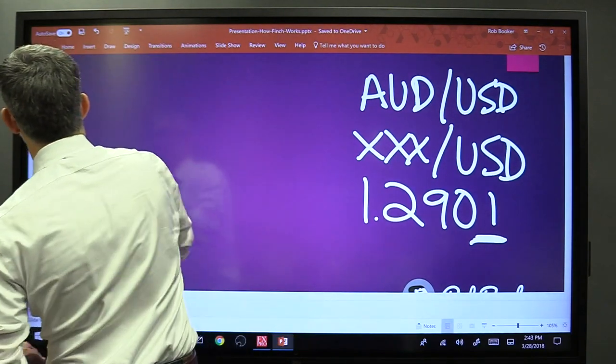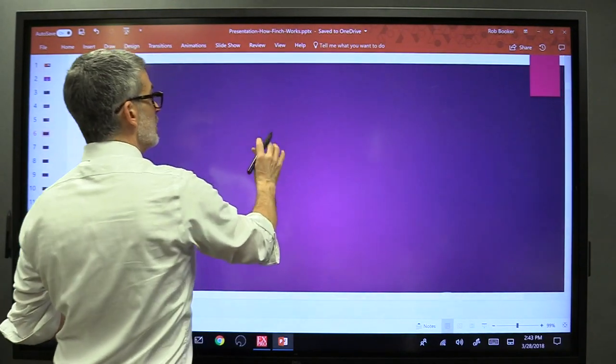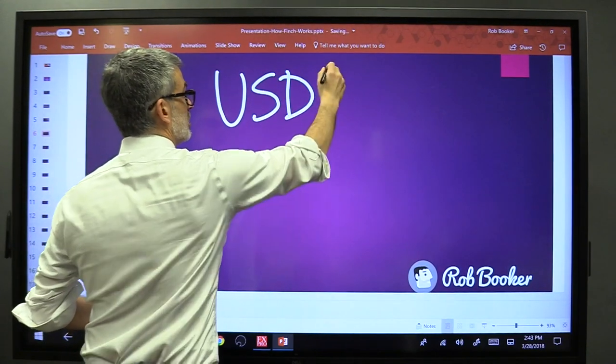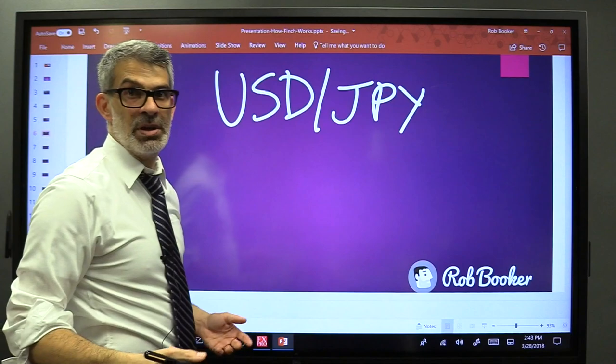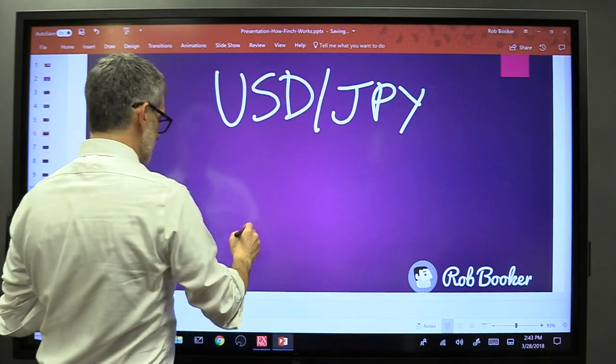Now this all changes if we're looking at Japanese yen major currency pairs. So for example, the currency pair US dollar Japanese yen.